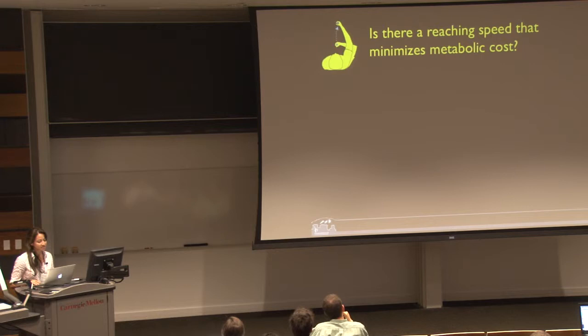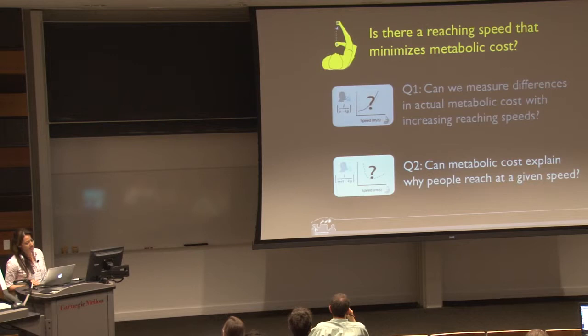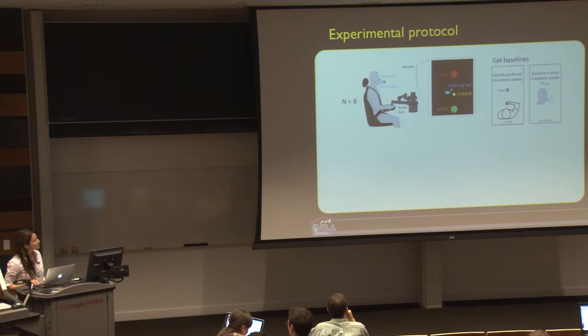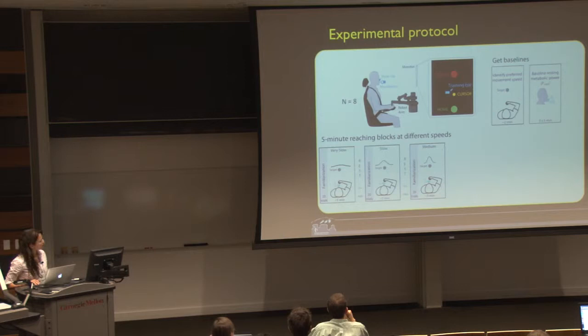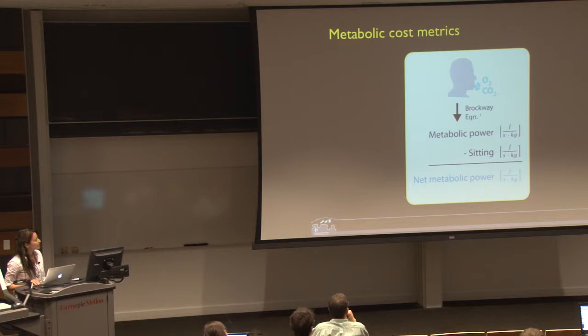We had two primary questions: can we measure differences in actual metabolic cost with increasing reaching speeds, and can metabolic costs explain why people reach at a given speed? To test this, we had eight subjects hold the handle of a manipulandum and make 20-centimeter reaching movements. The handle controlled a cursor on the screen and subjects moved the cursor from a home circle to a target circle. We measured metabolic cost as they reached at six prescribed speeds: very slow, slow, medium, fast, very fast, and preferred. We measured their rates of oxygen consumption and carbon dioxide production and converted to net metabolic power using standard methods.